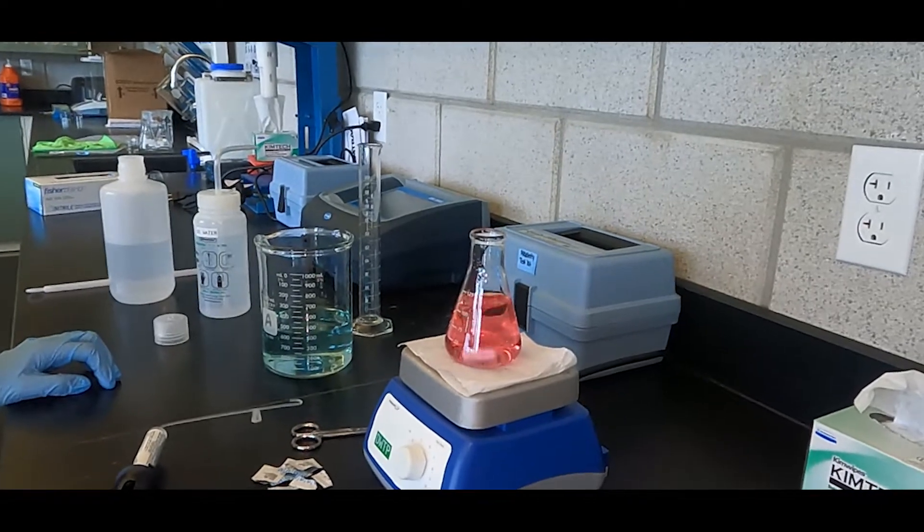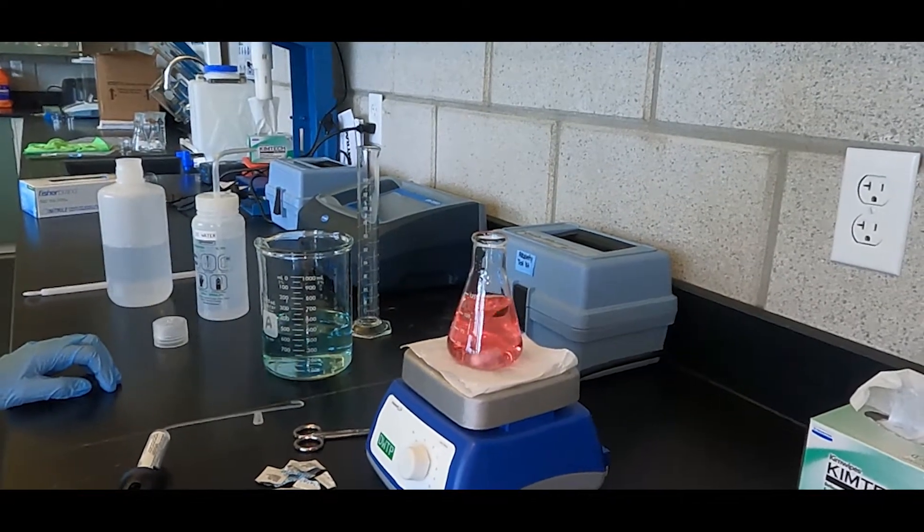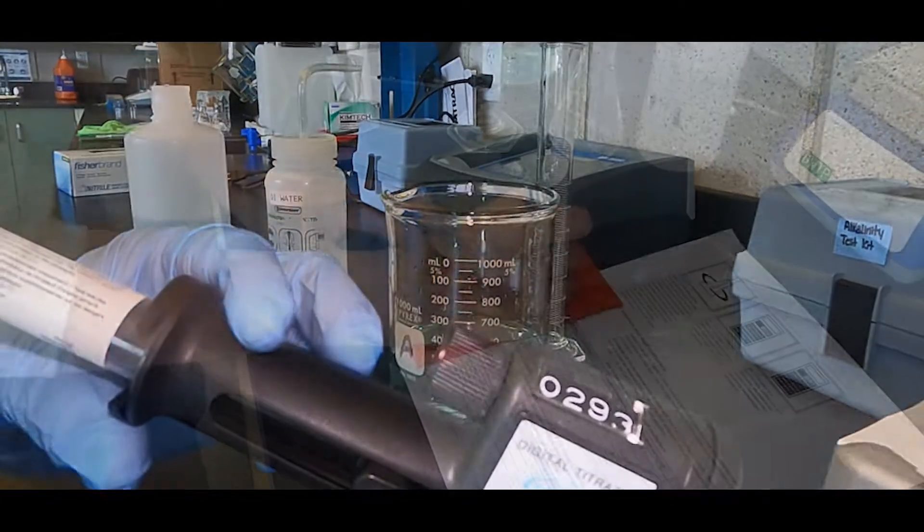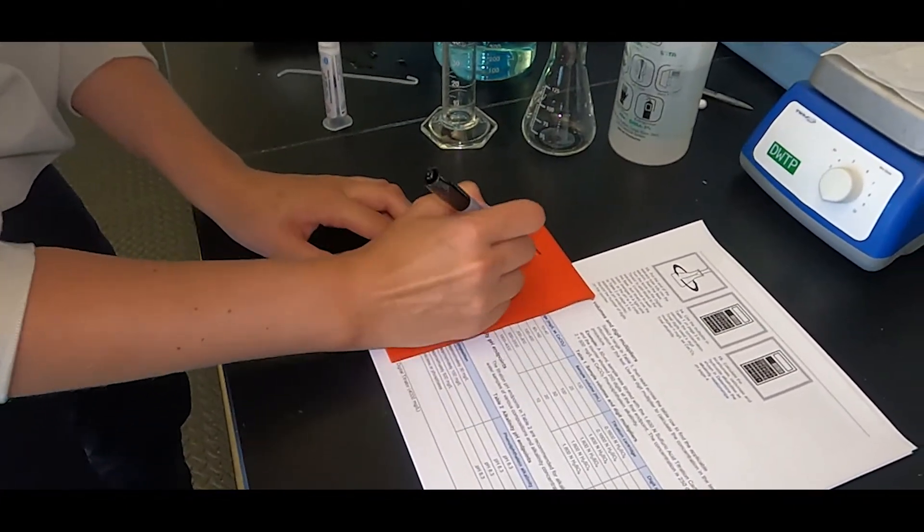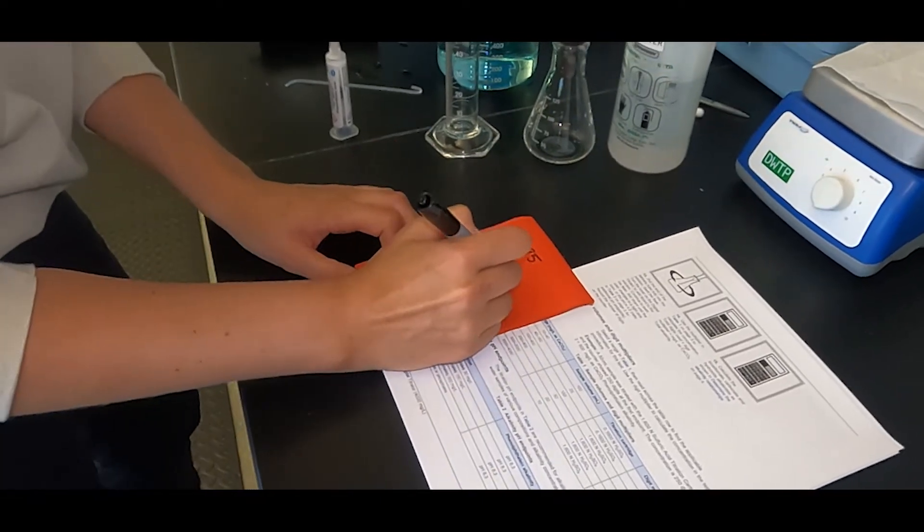Record the final value displayed on the digital titrator. This is your total alkalinity reading. Use the multiplier in the table to calculate the concentration as milligrams per liter of calcium carbonate.